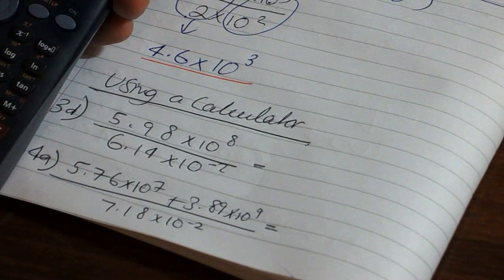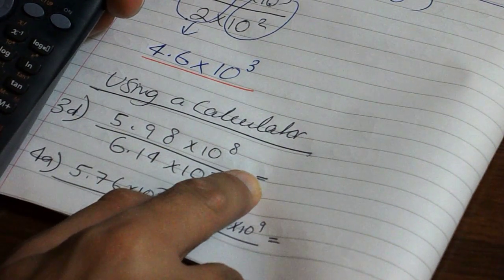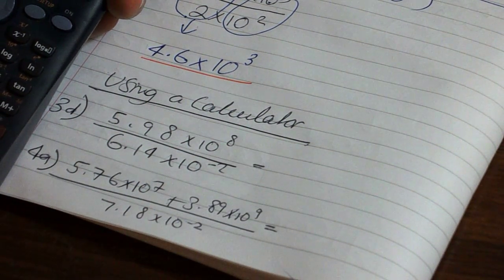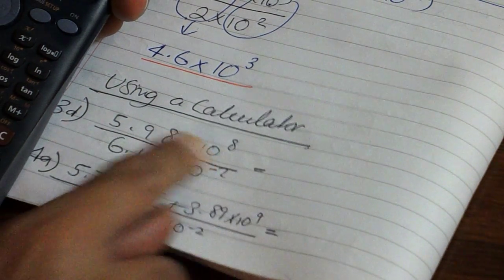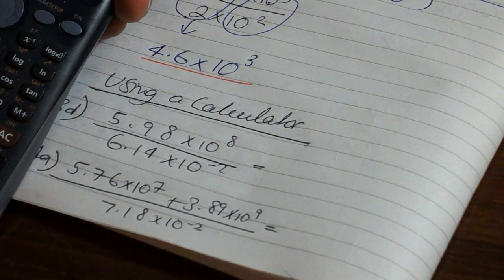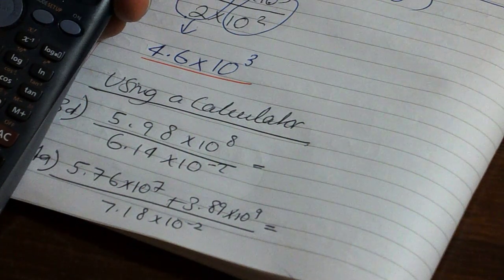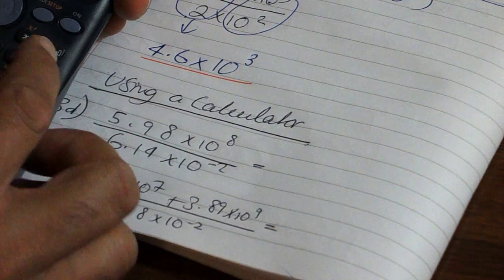We look at how we enter that into the calculator. First, we press the fraction button to get our division line. So, 5.98. To get the times 10, we press this button on the bottom over here. That sets up standard form, and then we just type in 8.